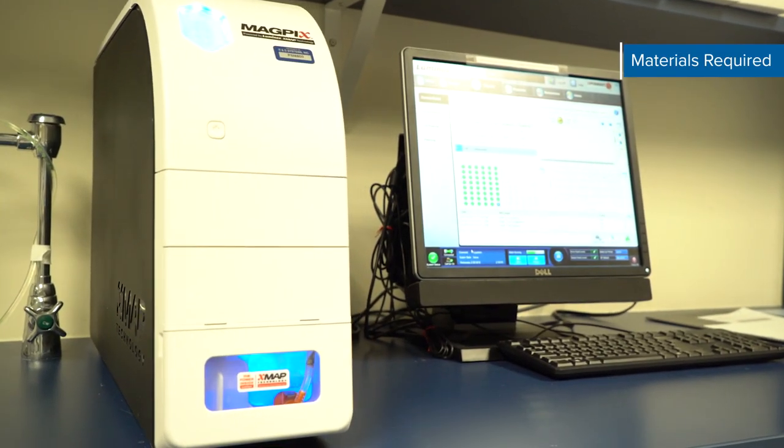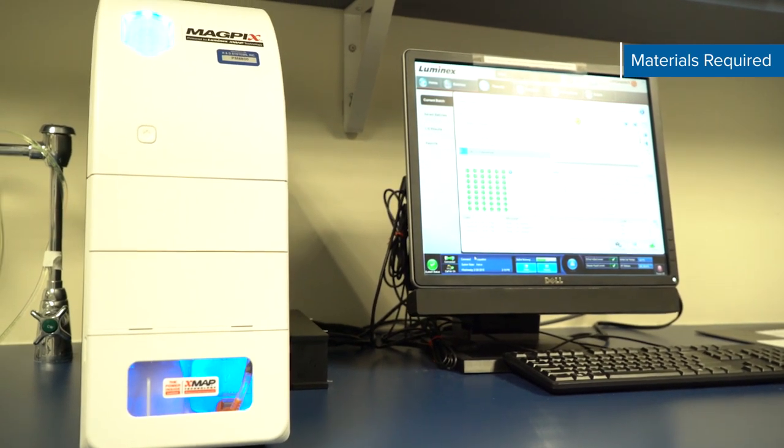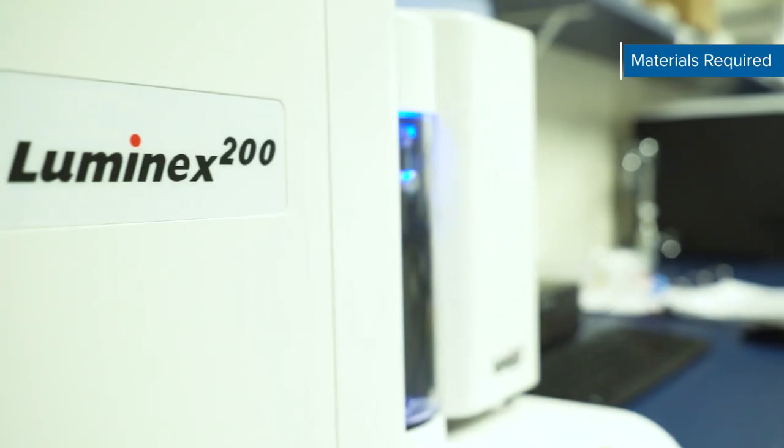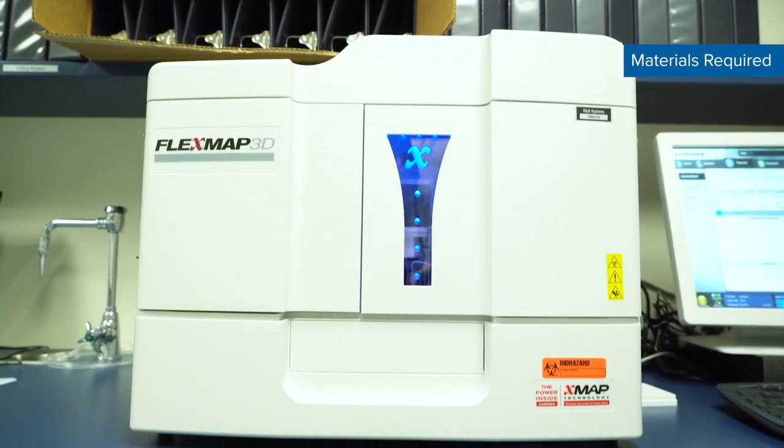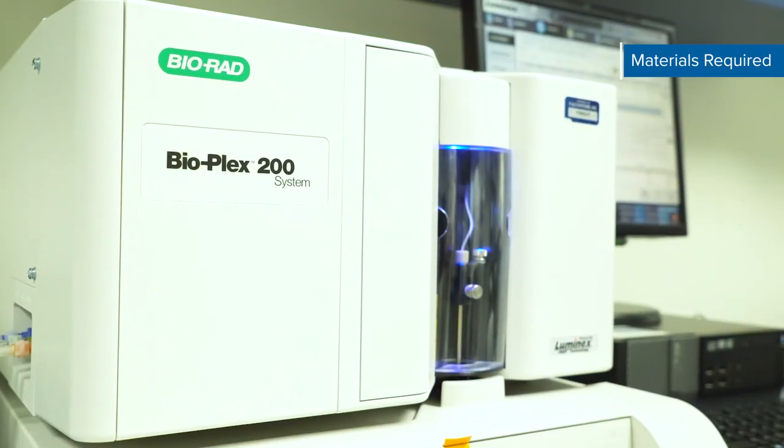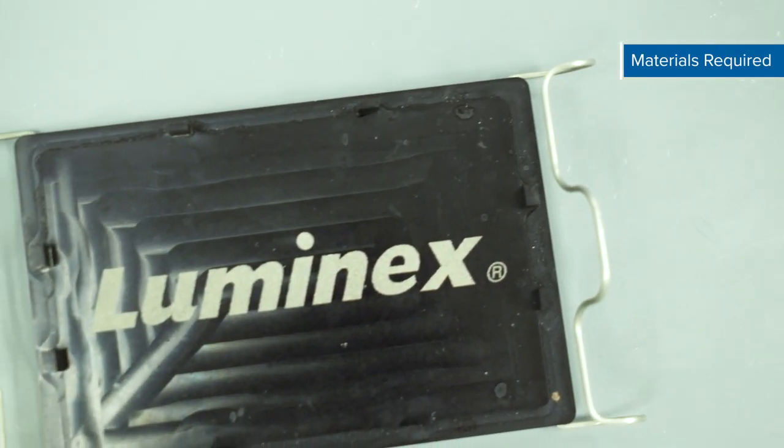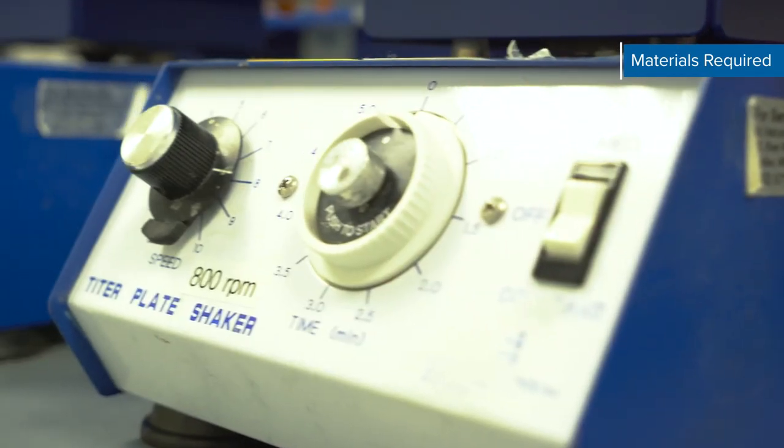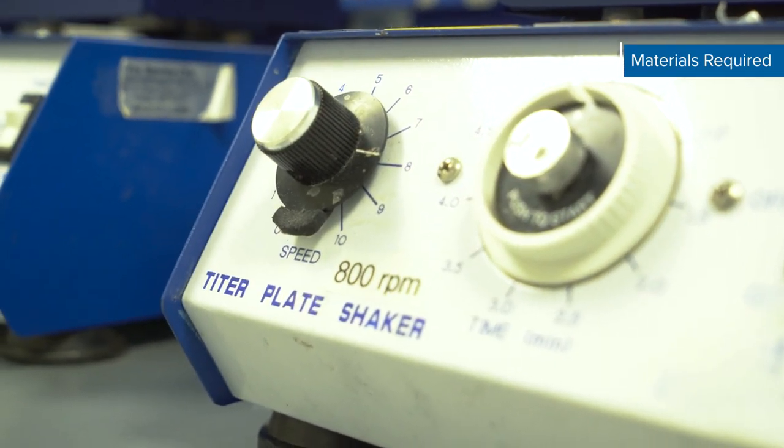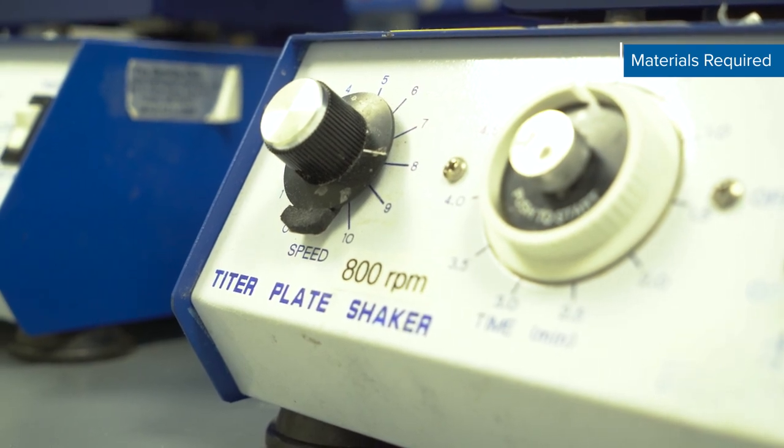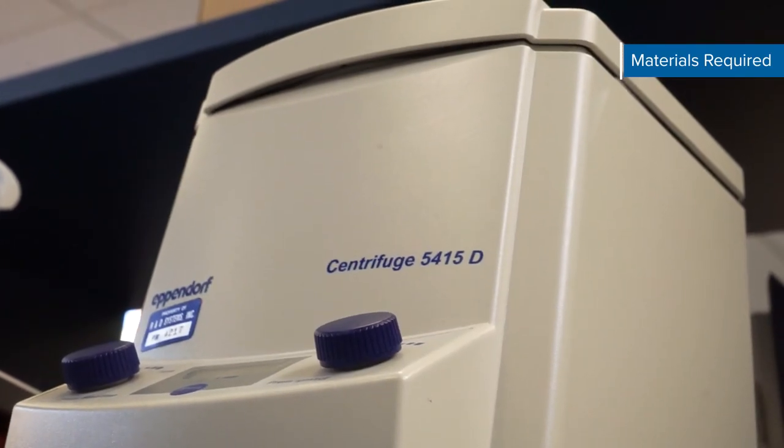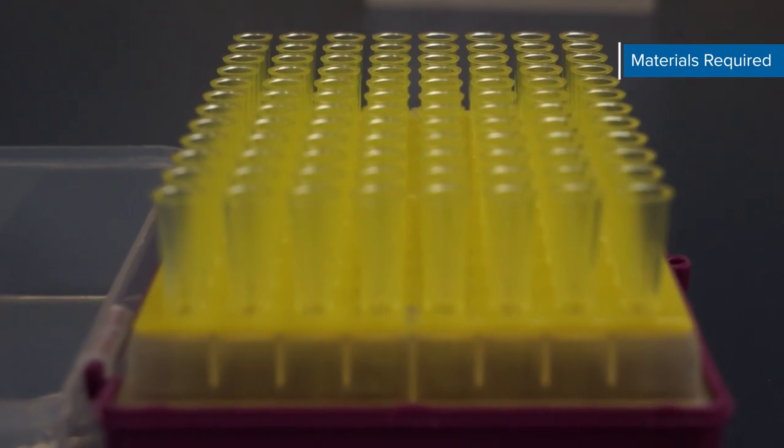In addition to the kit contents, you'll also need a compatible instrument like a MagPix, Luminex 100-200, FlexMap 3D, or BioRad BioPlex, a handheld microplate magnet or plate washer with a magnetic platform, a horizontal orbital microplate shaker capable of maintaining a speed of 800 plus or minus 50 RPM, a microcentrifuge, and general lab supplies.